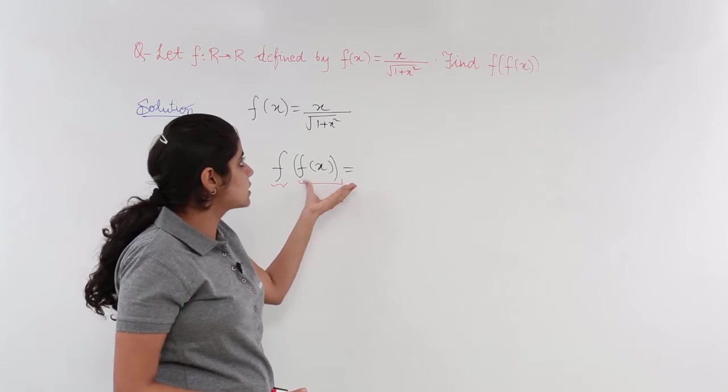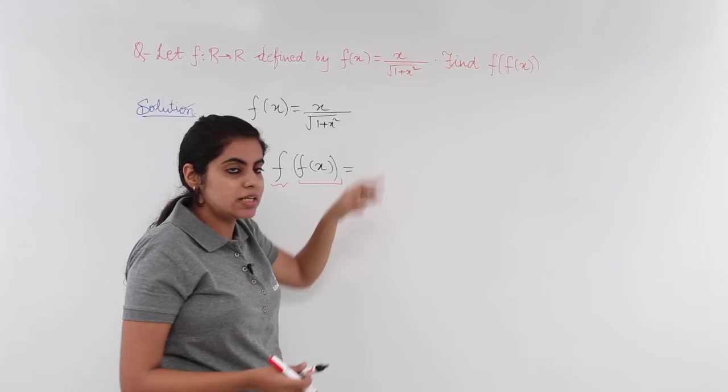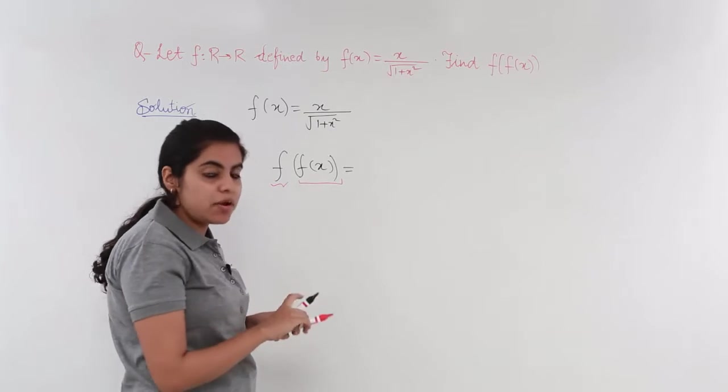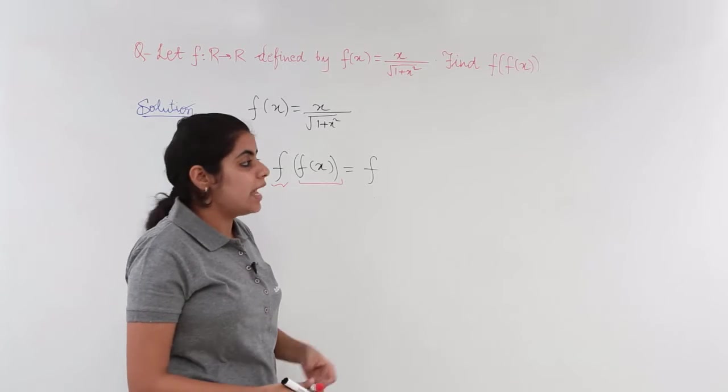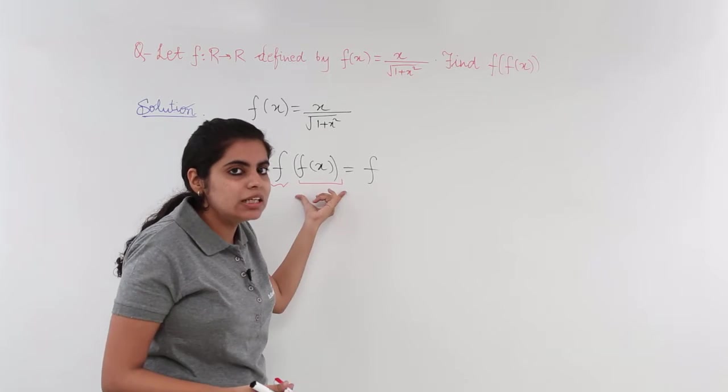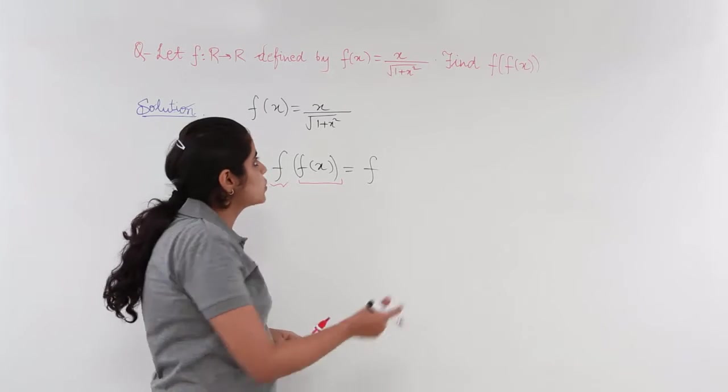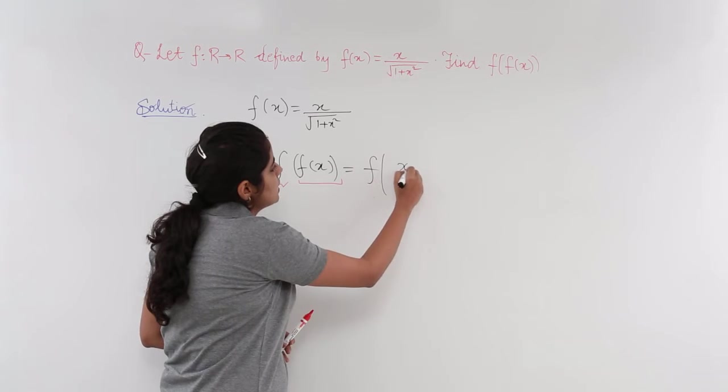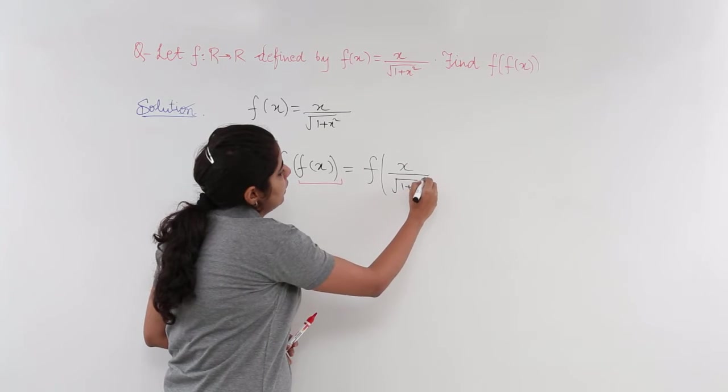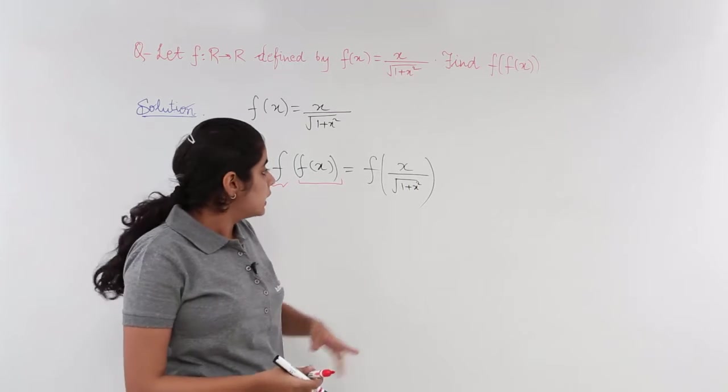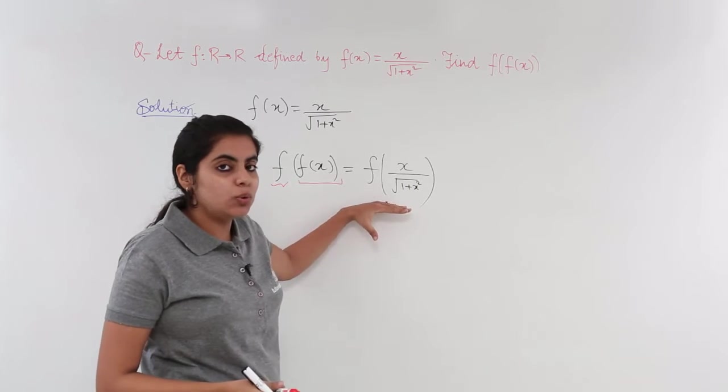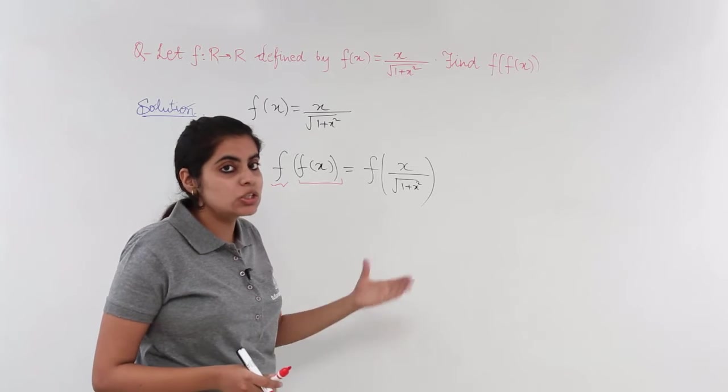f of x has got the value from the question itself. So, the outer f of the function stays as it is and f of x, the internal one obtains the value. So, what is the value? That is x upon under root 1 plus x square.